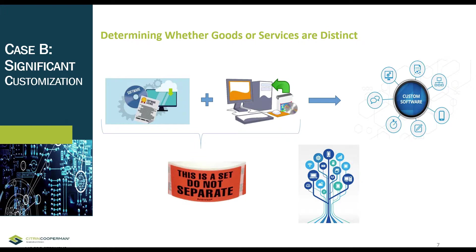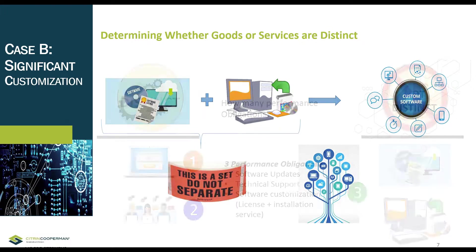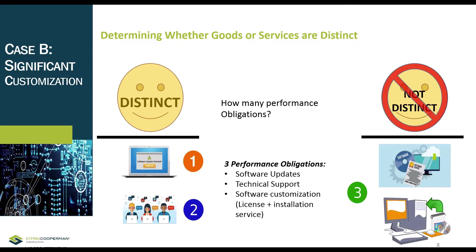The software will be significantly modified and customized by the installation service. Consequently, the company determines that the promise to transfer the license is not separately identifiable from the customized installation service, and therefore the software license and the customized installation service are not distinct from one another. On the basis of the same analysis as in Case A, however, the entity concludes that the software updates and technical support are distinct from the other promises in the contract.